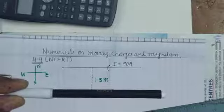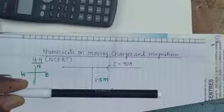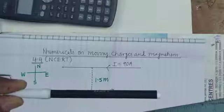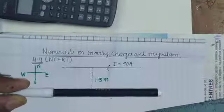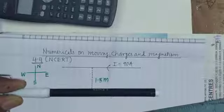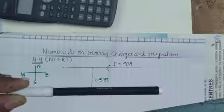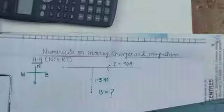Since this is a long overhead wire, the magnitude of the magnetic field is found using B = (μ₀/4π)(2I/r). For the direction, we use the right-hand palm rule: place the thumb in the direction of current and point the fingers towards the point at which the field is required.